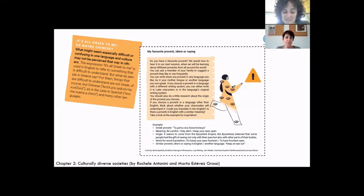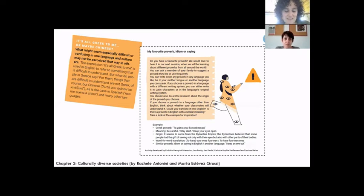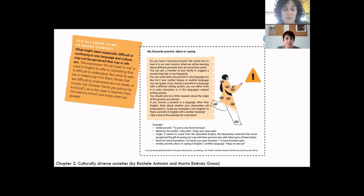According to the Sapir-Whorf hypothesis, the language we speak shapes and determines the way we are able to perceive reality. That is no longer believed to be entirely true, since the differences between languages are not so great that understanding among people is impossible. However, most linguists do agree with a weak version of the hypothesis — that the way we express idioms and the things around us in general do have an influence on our thought and perception of the world. You will find more examples and definitions in chapter 2 that you can use with your students.